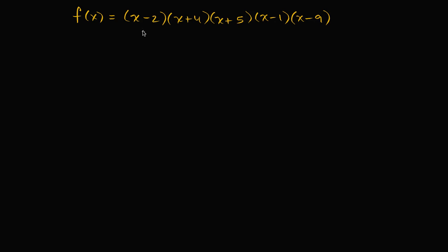We have a function f of x written as the product of a bunch of first degree expressions. We could also view this as a polynomial — especially if we expand it all out, it'll have our more traditional form. But what's nice about this form is that it's very easy to pick out the zeros.